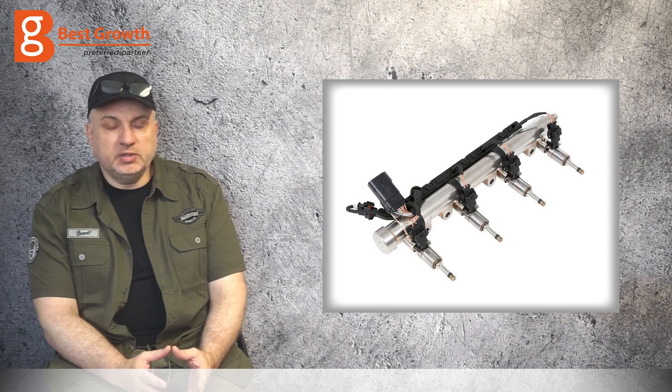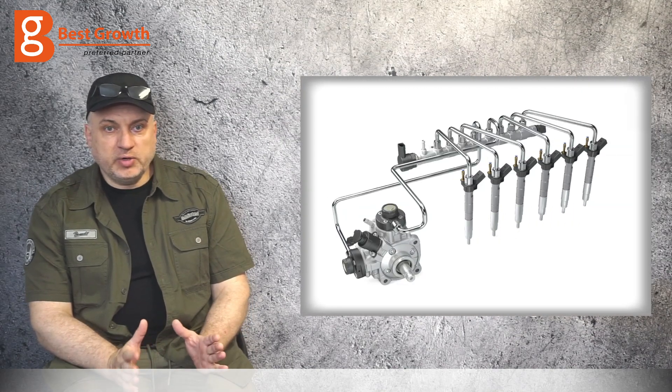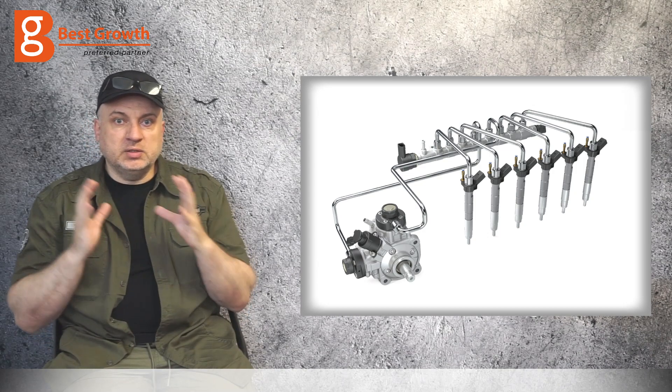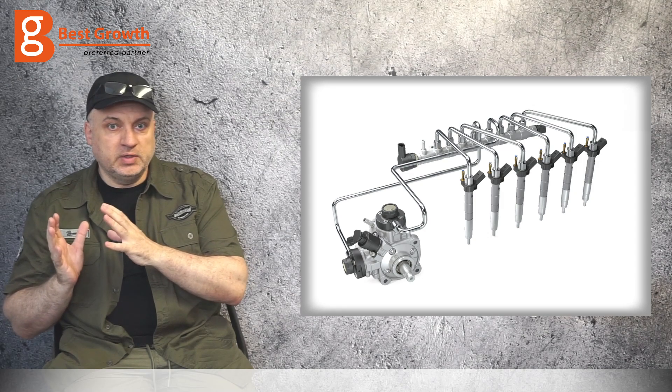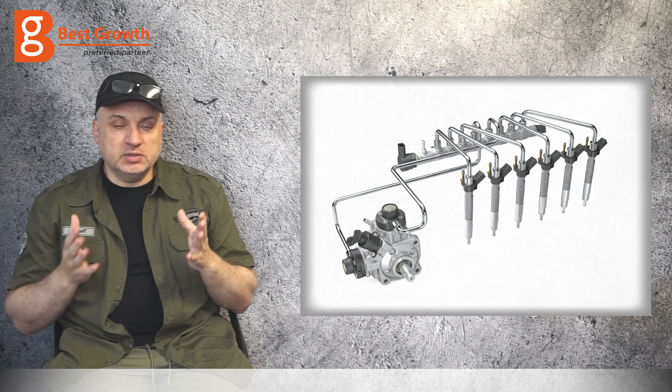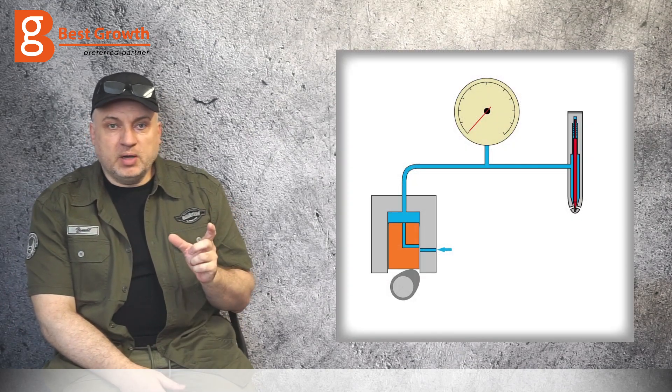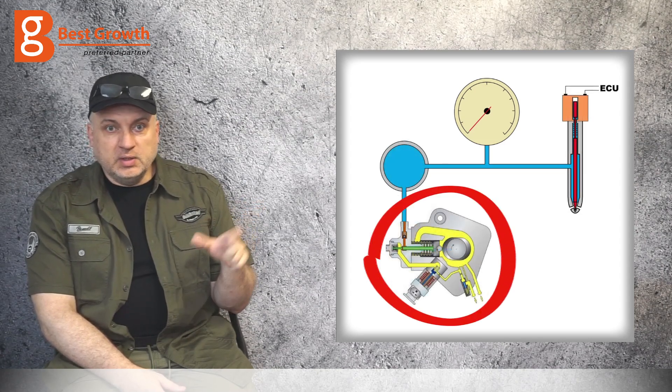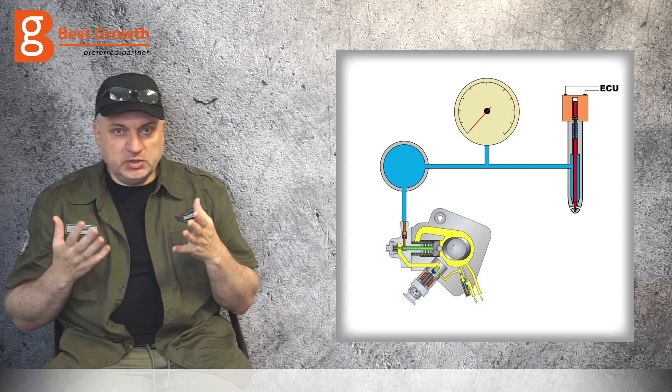Why is it supposed to be better? The main factor that brings entirely new quality is separating those two functions: generating pressure and managing opening and closing the injector. And this has been separated on the common rail injection system. There is a separate pump that generates the pressure, the constant pressure in the common rail, and there is an electronic system that manages opening and closing the injectors.